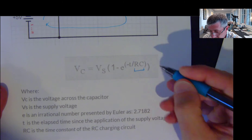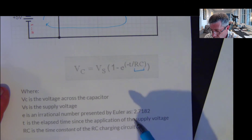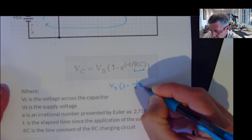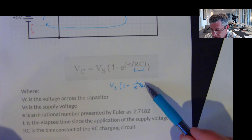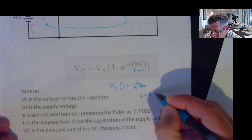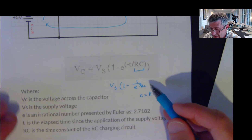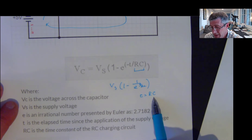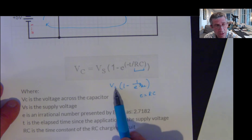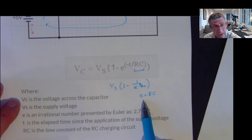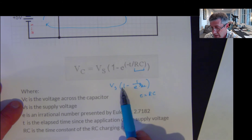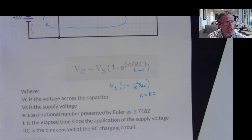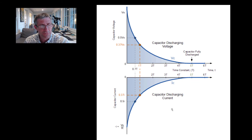This is what we call the time constant. I could rewrite this as VS times 1 minus 1 over e to the T over RC. So when time is equal to one time constant — when time equals R times C — I'm dividing RC by RC, so I get e to the power of 1. I'm subtracting 1 over e. The time constant is a convenient point. After one time constant, we'll have our voltage minus 1 over e. At my second time point, I'll have VS times 1 minus 1 over e squared, and so on.